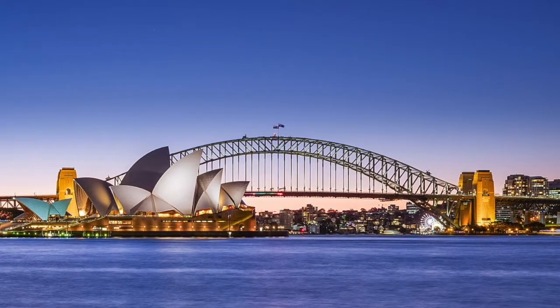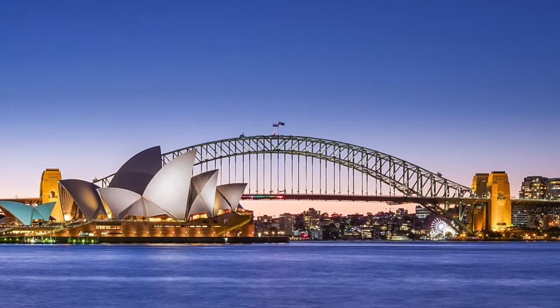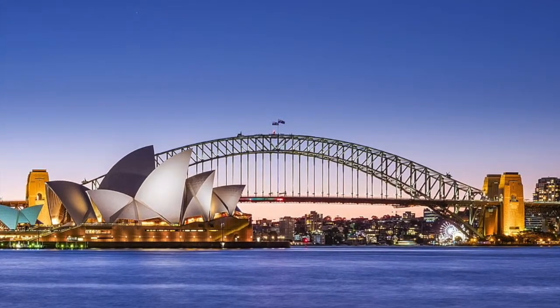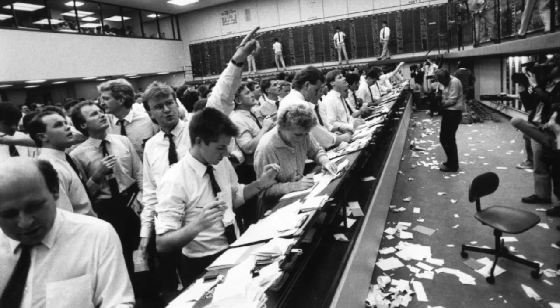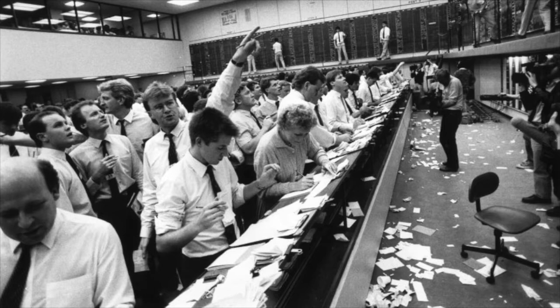The ASX headquarters is located in Sydney, Australia, the capital of New South Wales. The Australian Stock Exchange was originally founded in 1987 on April 1st through incorporation under legislation of the Australian Parliament. This involved the amalgamation of the six independent stock exchanges that had operated in the state's capital cities.